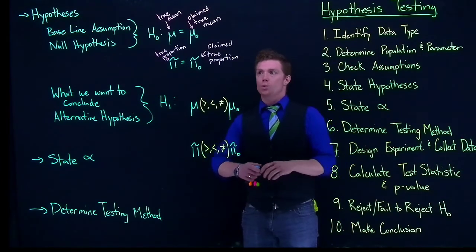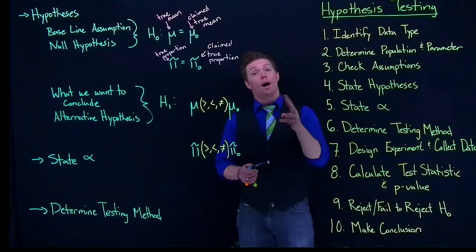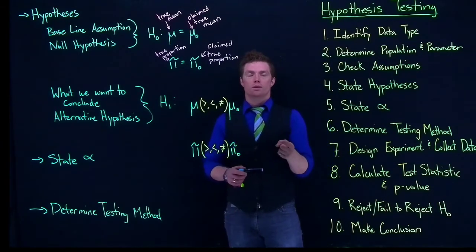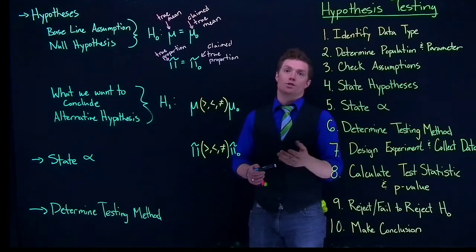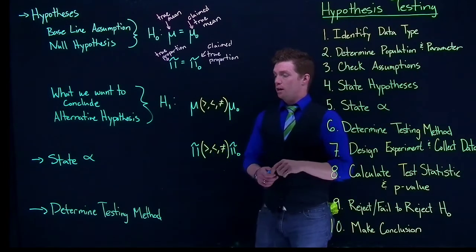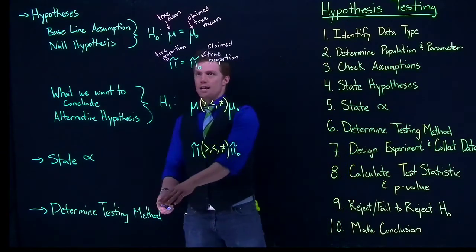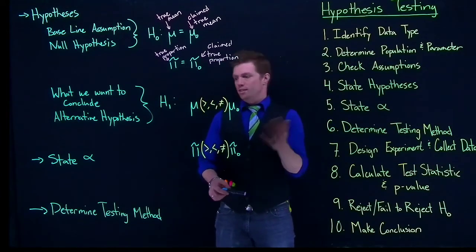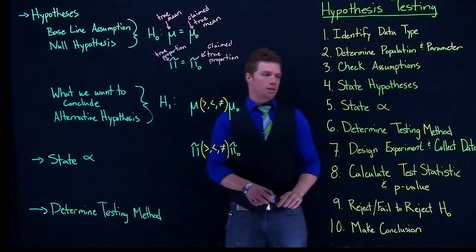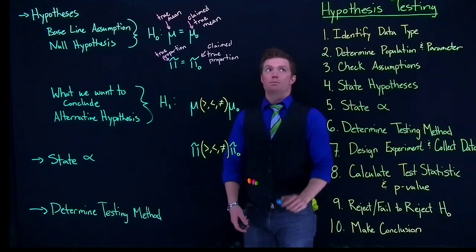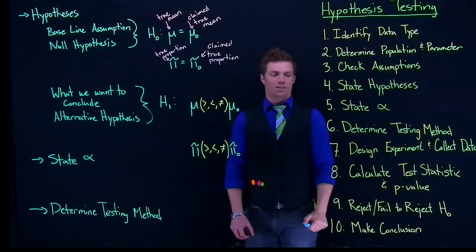But we've kind of done this before. Remember when we were doing that with our confidence intervals, when we were dealing with the means, we had two options. And we had to determine, well, do we know the true standard deviation or do we not know the true standard deviation? And that gave us two different ways to calculate out the margin of error. So similarly here, we need to determine our testing method. And when we identify our data type, that's one of the steps to help us determine our testing method. And so that gets us through step six on our hypothesis testing.